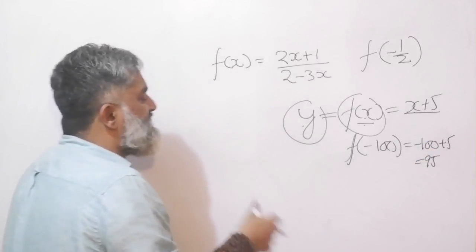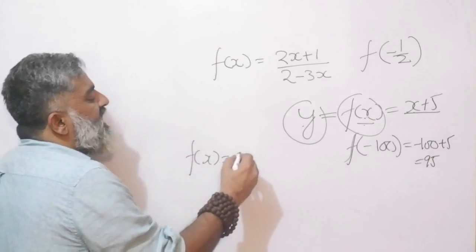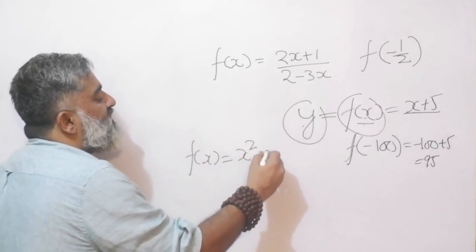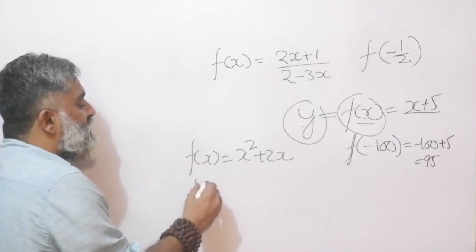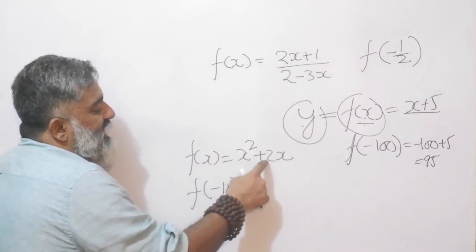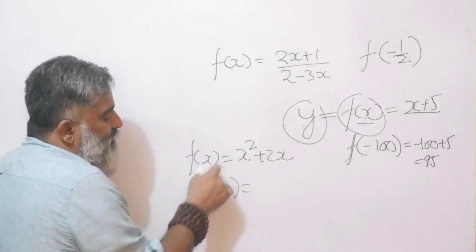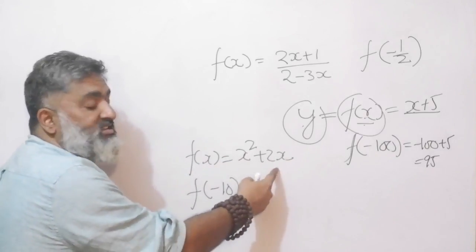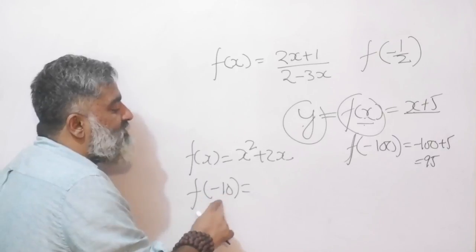This was too easy, so let's make it slightly more complicated. f(x) is equal to x square plus 2x, and I say what is f of minus 10. Wherever there is x in the story, replace it by minus 10.